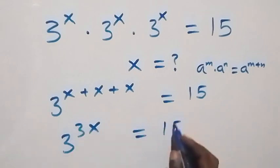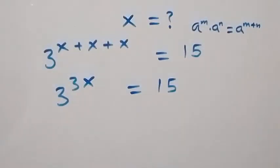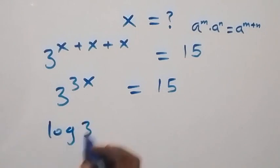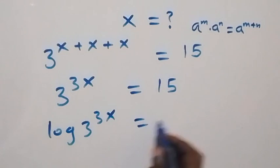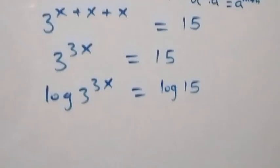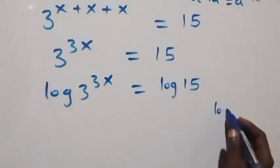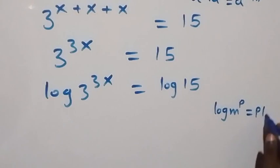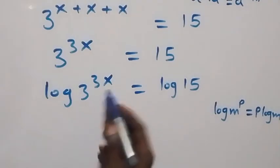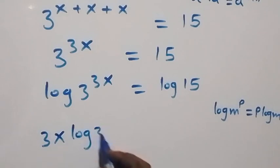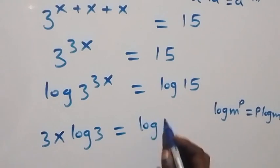From here, the next step is to take the log on both sides. So we have log of 3 raised to power 3x equals log 15. We can apply the power rule of logarithms: log of m raised to power p is the same as p times log m. Applying this, the power 3x comes down and we have 3x · log 3 equals log 15.